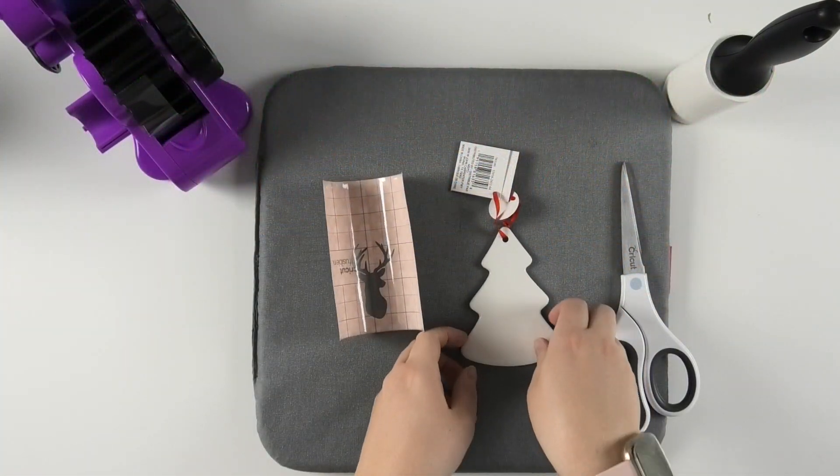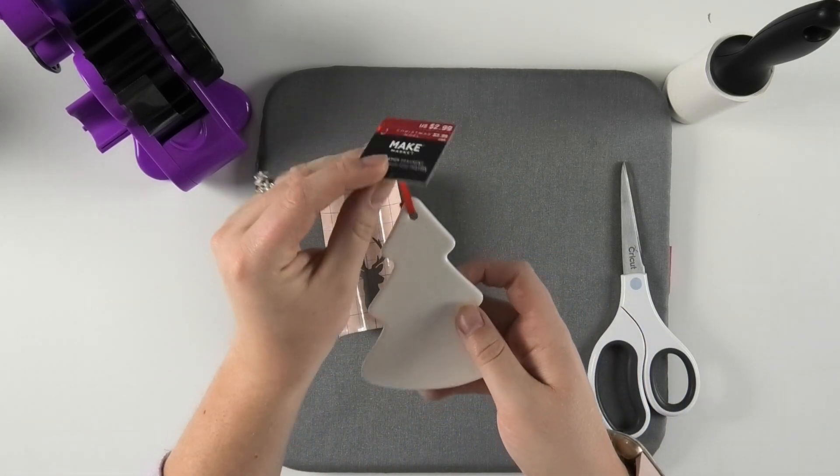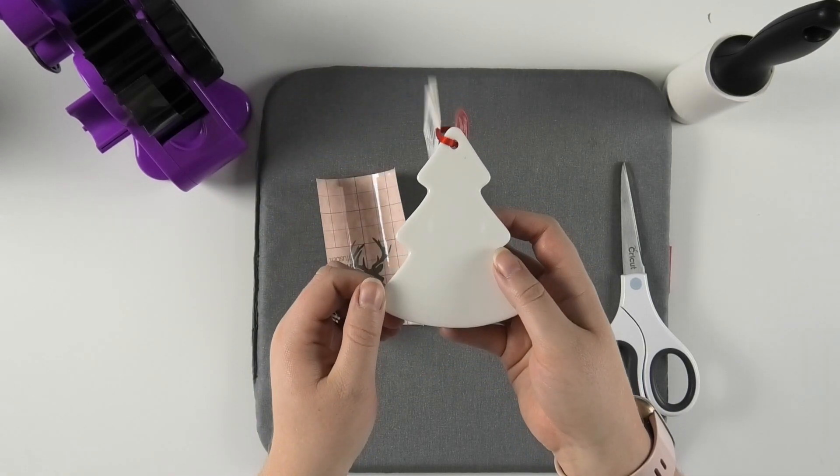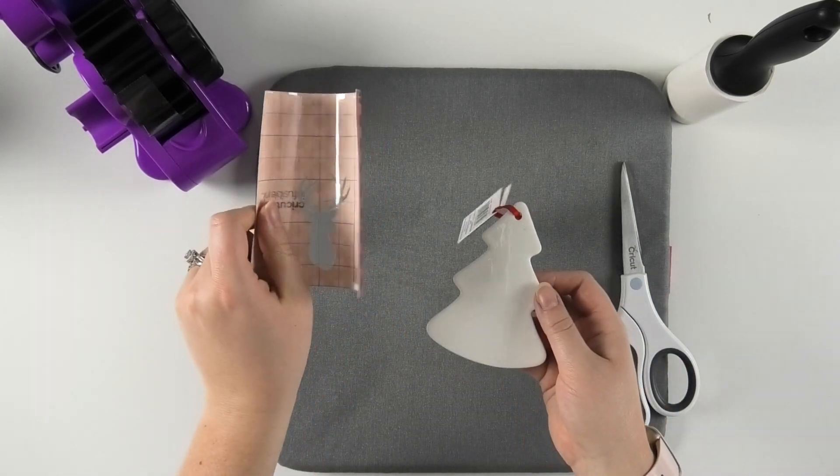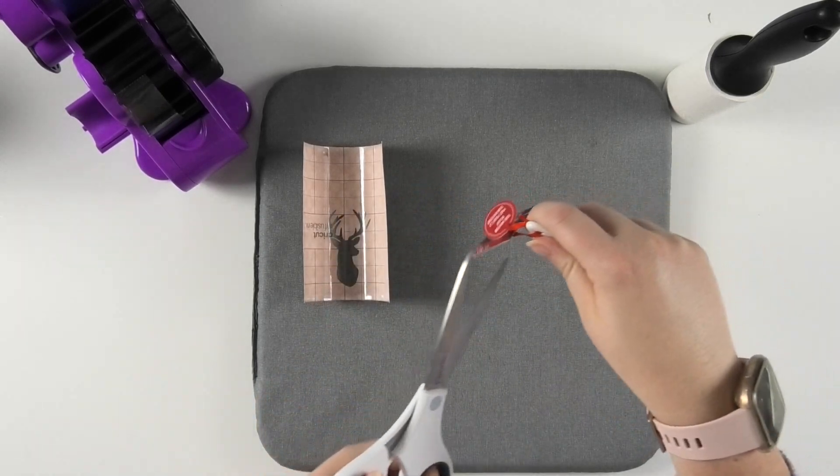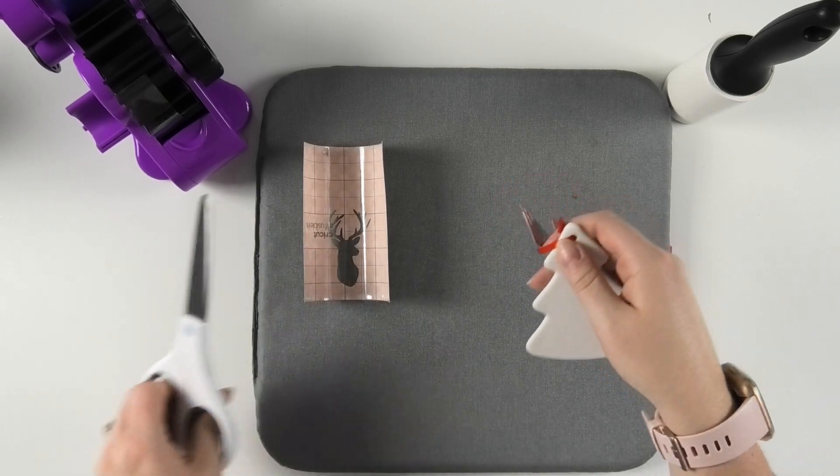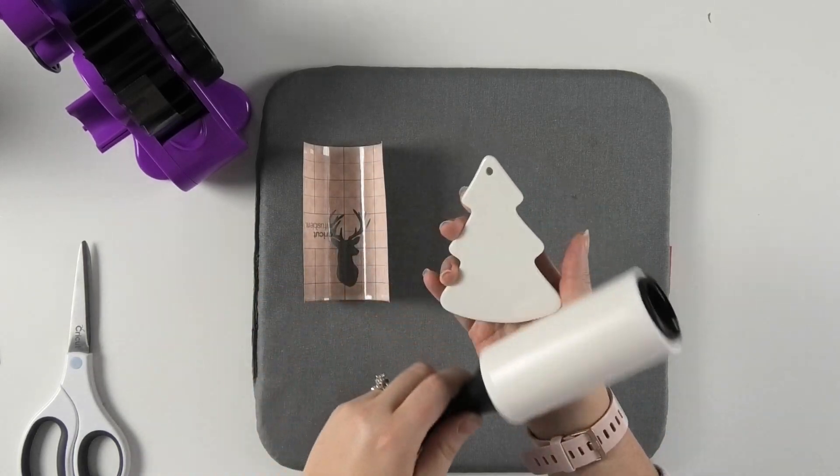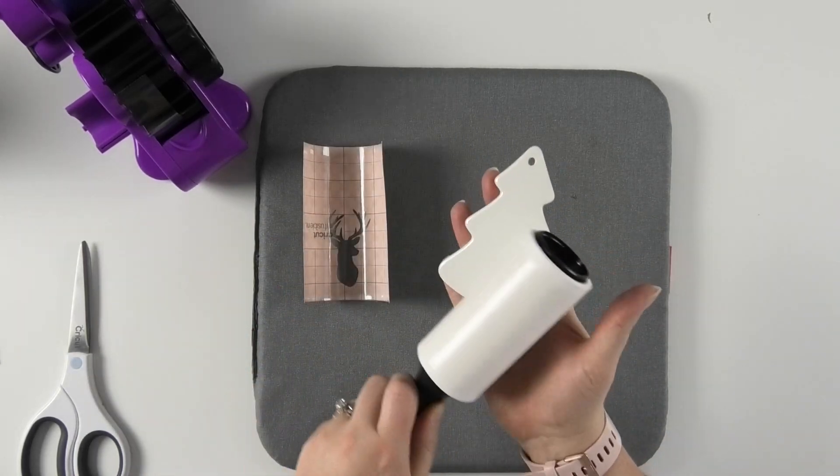Our first last minute gift idea is the sublimation ornaments from Michael's. These are the Make Market brand ornaments, which you can get at your local craft store, and you can make them using some infusible ink if you don't have a sublimation printer. So to get started, I am going to cut the ribbon off of this tree so that I can utilize the entire surface. Then I'm going to clean it off using a lint roller on the side that I'm going to use my infusible ink.